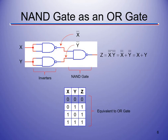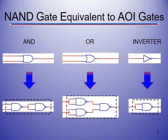Applying DeMorgan's theorem — break the line and change the sign — we get X double-bar OR Y double-bar, and the double bars cancel, giving us X OR Y. That's how we use NAND as an OR gate. To summarize: an AND gate takes two NAND gates, an OR takes three NAND gates, and an inverter takes a single NAND gate.